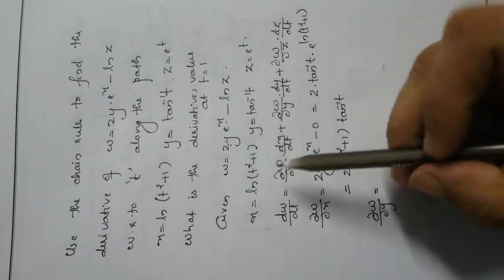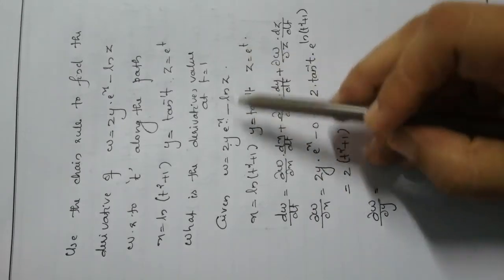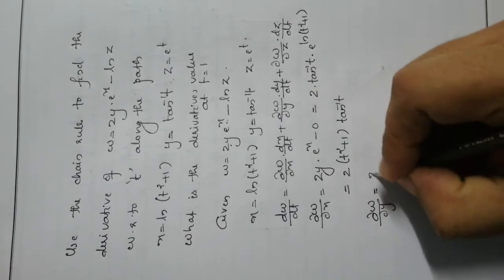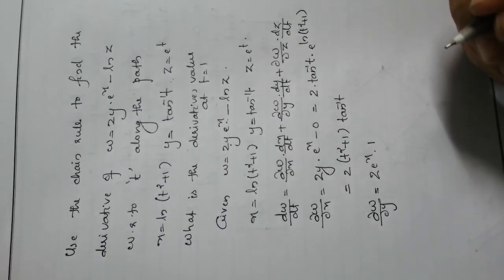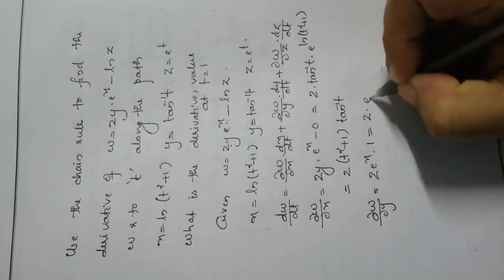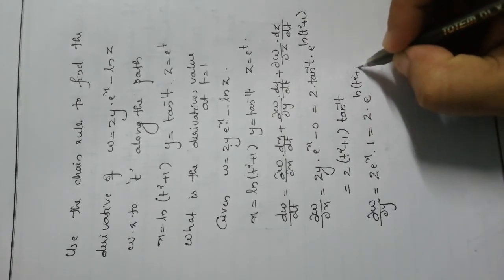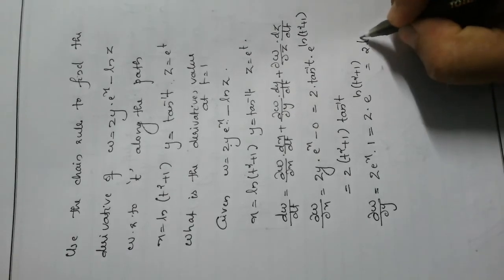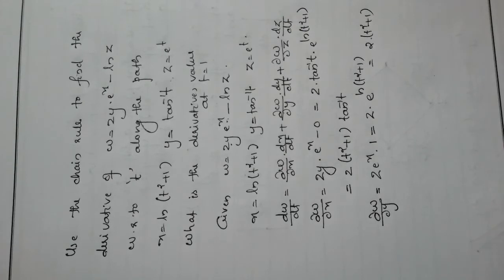Next, ∂w/∂y: derivative of 2y·e^x with respect to y is 2e^x. Substituting x = ln(t² + 1): 2·e^(ln(t²+1)) = 2(t² + 1). So ∂w/∂y = 2(t² + 1).